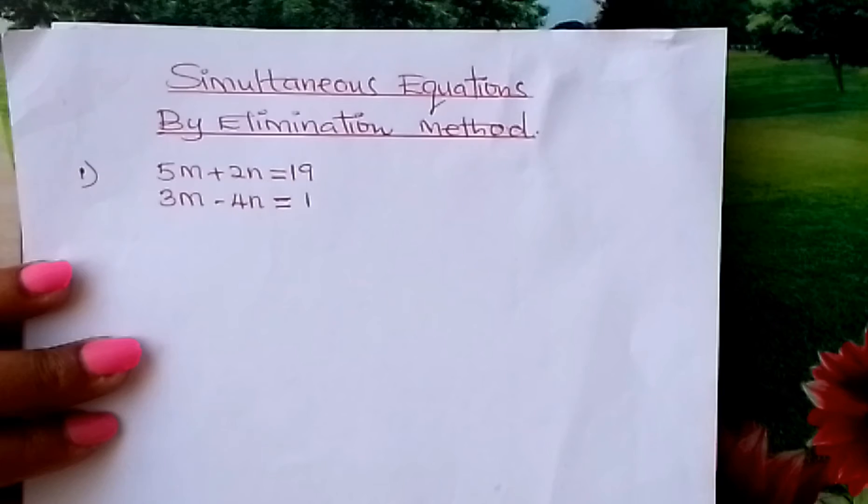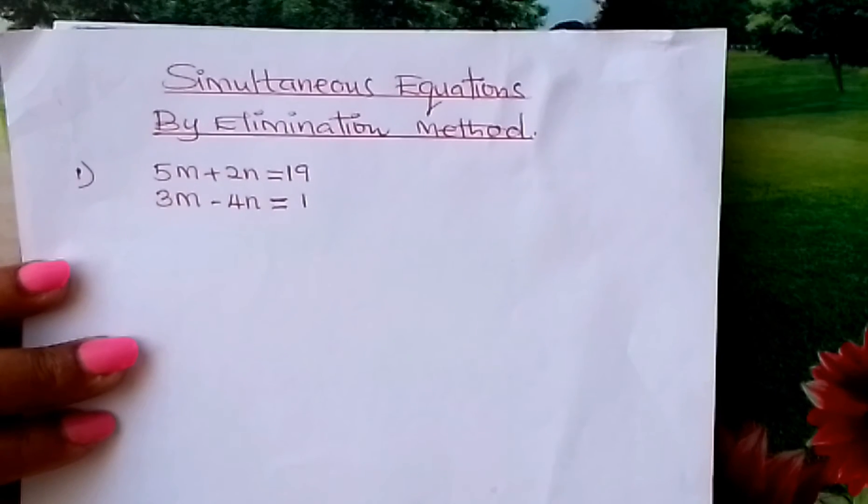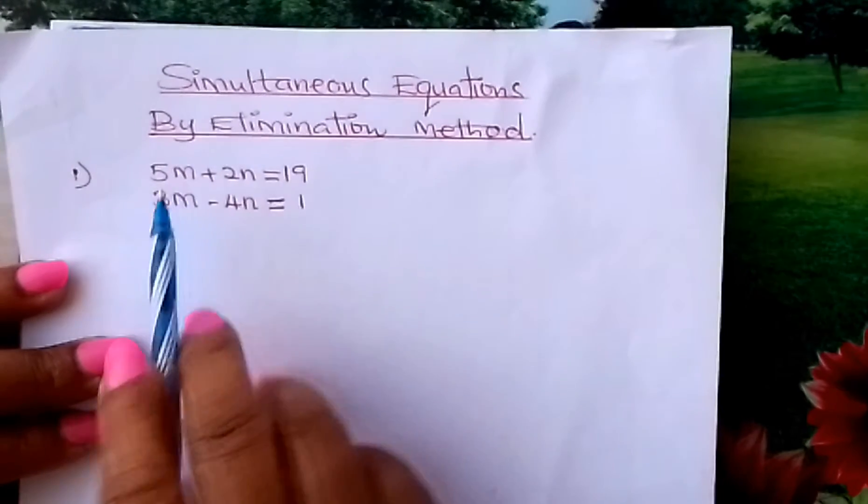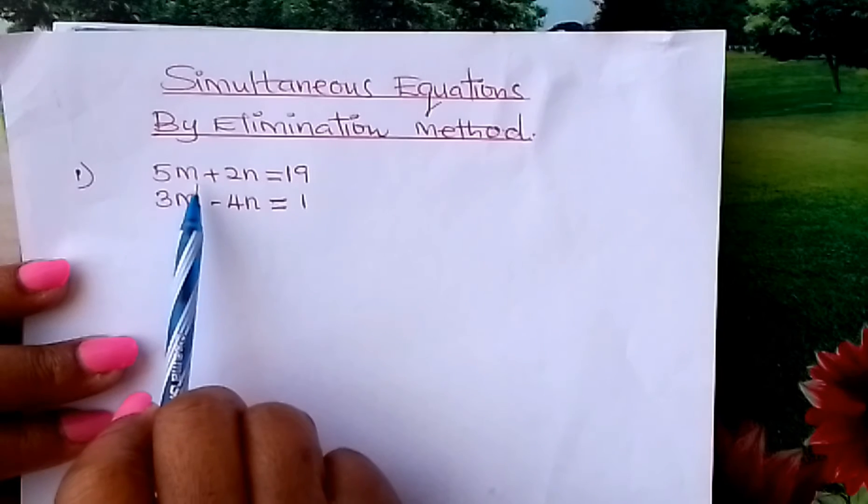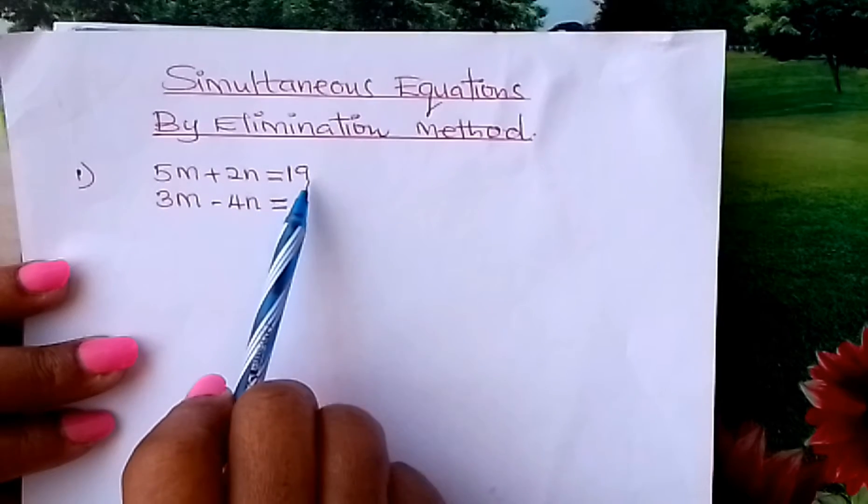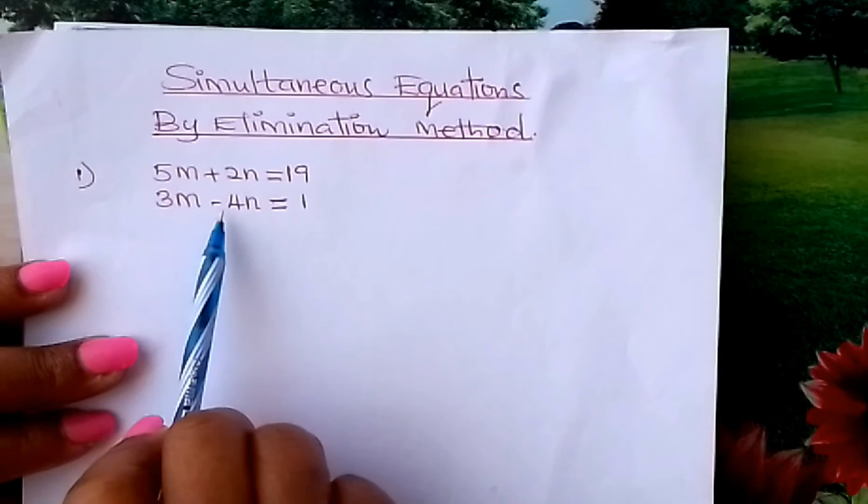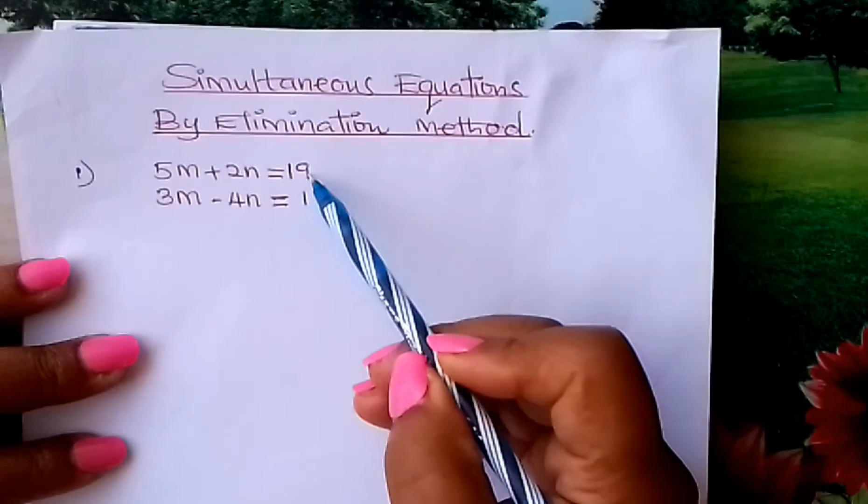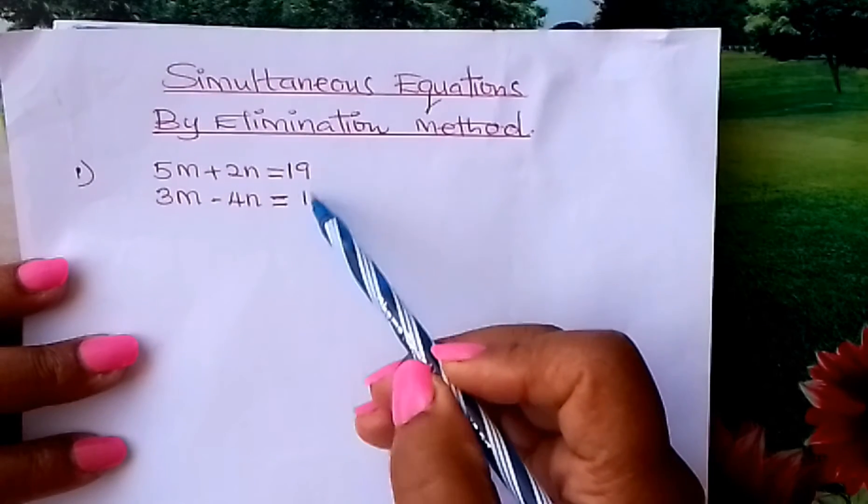I'd like to remind you how to go about it. You have 5M plus 2N equals 19, and 3M minus 4N equals 1. How do you solve these two simultaneously?